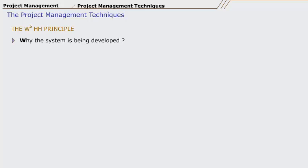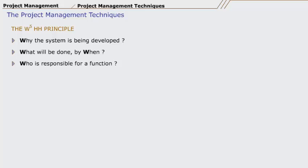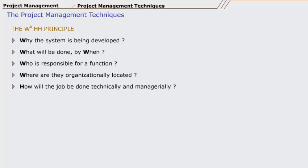Why is the system being developed? What will be done? By when? Who is responsible for a function? Where are they organizationally located? How will the job be done technically and managerially? How much of each resource is needed? This principle is applicable to almost all types of software projects, regardless of their size or complexity.